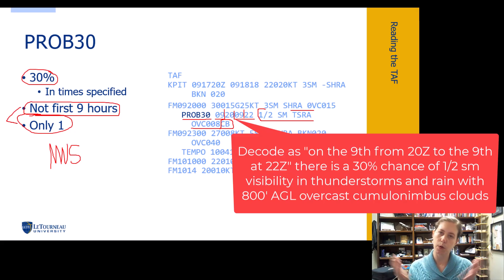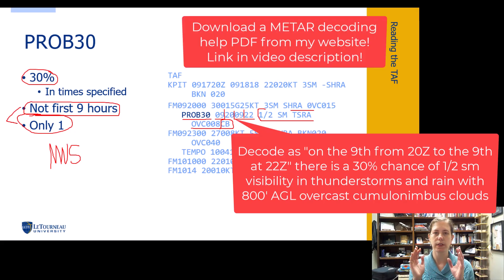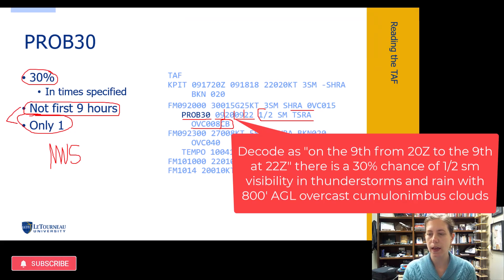Notice all that coding came over from METAR information. So same kind of coding conventions. So we have that PROB30. It's a 30% chance of half a mile visibility and thunderstorms and rain and overcast cumulonimbus clouds at 800 feet. And we want to note that this is again in heights AGL. So heights above the ground level.